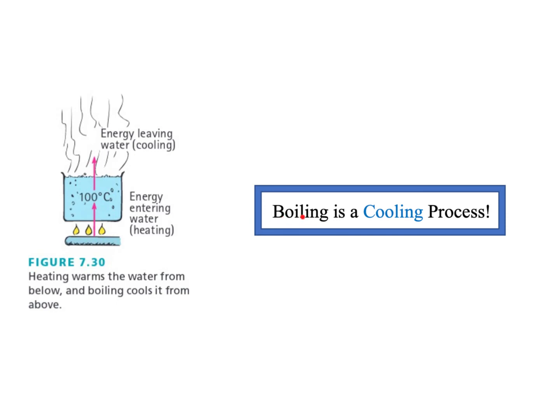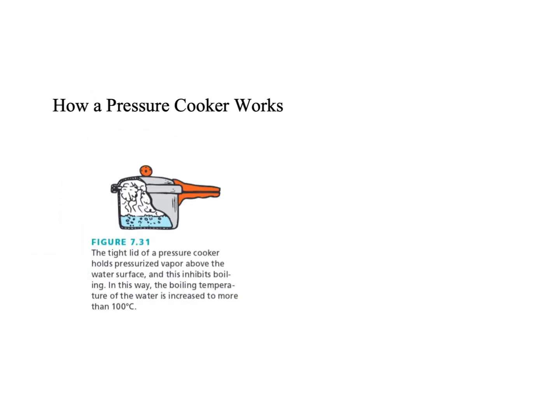Boiling is a cooling process, which is kind of interesting. A pressure cooker does the opposite of what happens in the mountains. A pressure cooker is a sealed pan that creates more pressure, so in order to make the water boil it has to boil at a higher temperature. If you were boiling eggs in a pressure cooker, you could boil them faster than in a regular cooker — that's why pressure cookers cook food really, really fast.